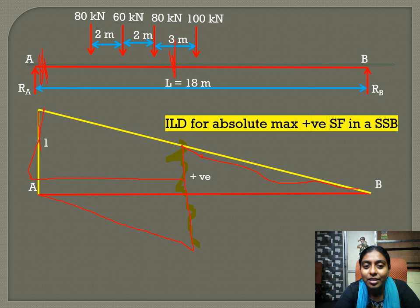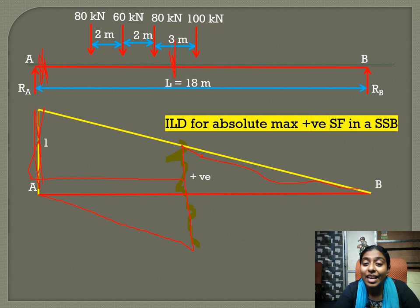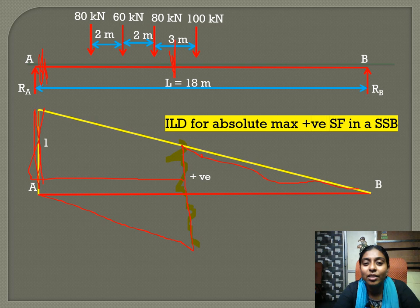The maximum ordinate equals 1. We know the maximum positive ordinate is (L − x)/L. Here L = 18 and x = 0, so (18 − 0)/18 = 1. So the maximum ordinate equals 1. This is the influence line diagram for maximum absolute shear force.